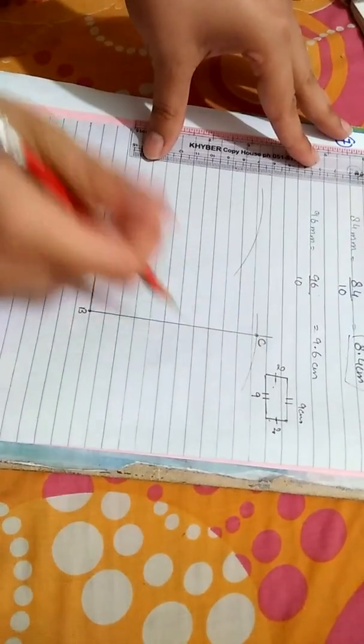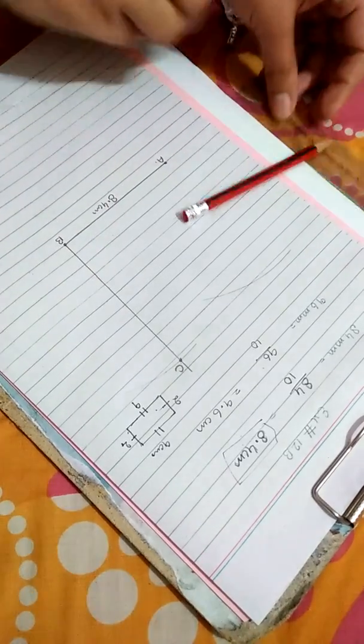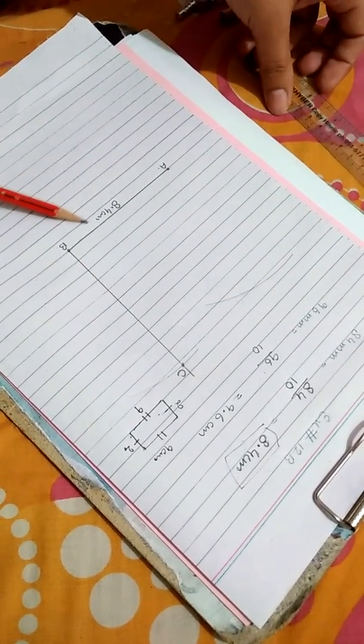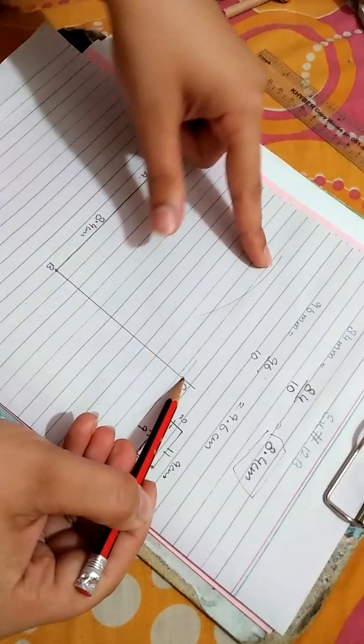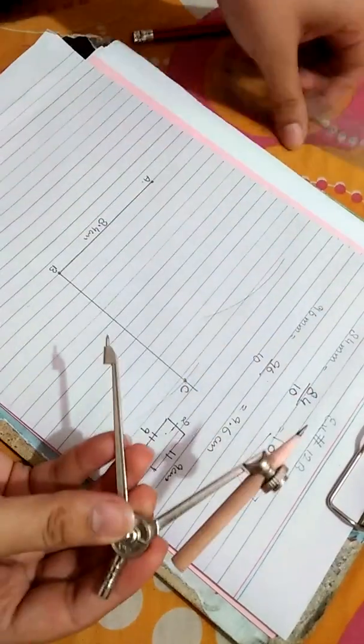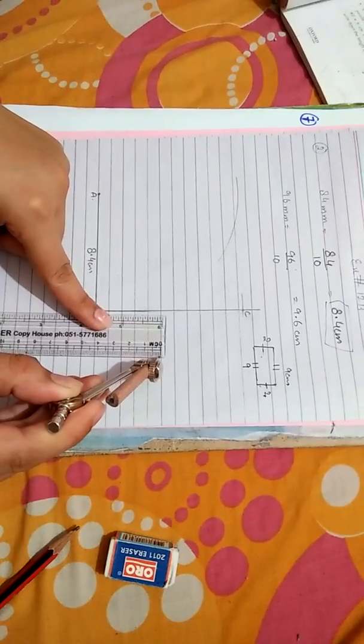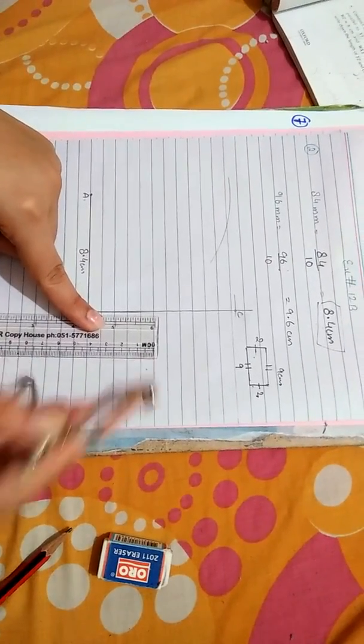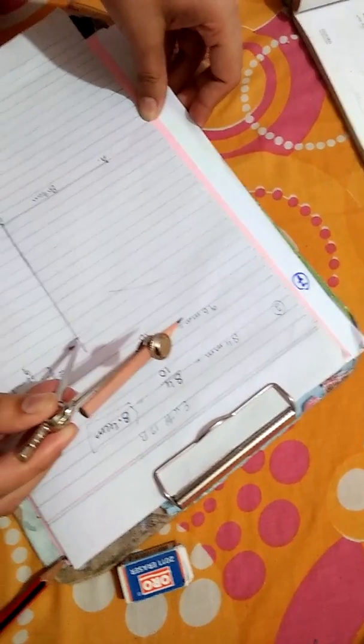Now from A to B is 8.4 centimeters, so definitely the distance from C to D will be also 8.4 centimeter. Take the reading of your compass 8.4 centimeter. Open the leaves of the compass to 8.4 centimeter. Take C as a center and mark the arc.